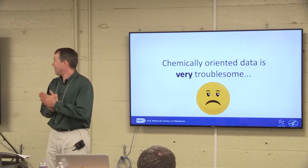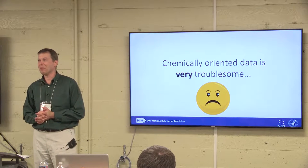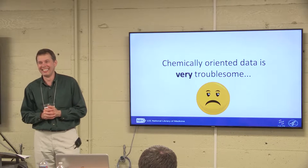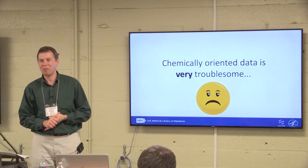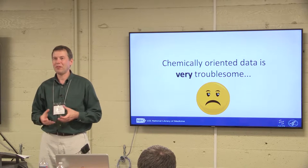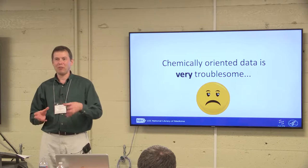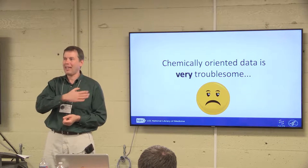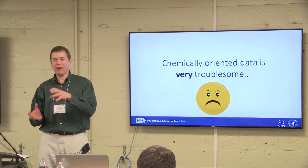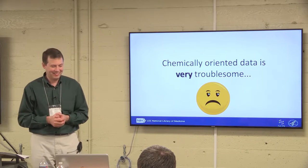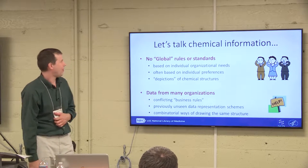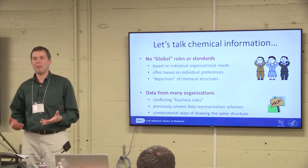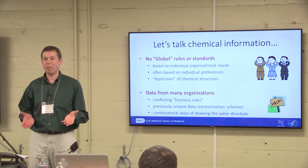Chemically oriented data is very troublesome, and if you don't come to grips with chemical substance information and the problems that materials present, you're in for a world of hurt. There aren't any really global rules or standards for chemical information. Every individual chemist or scientist can invent whatever they need when they need it. Within an organization, they might try to normalize things — one company I worked at had basically a team of five people as a registry who did all the extra work to normalize and orient molecules.